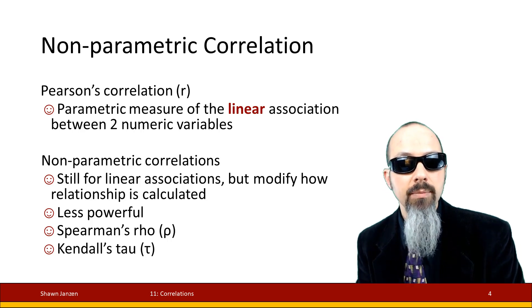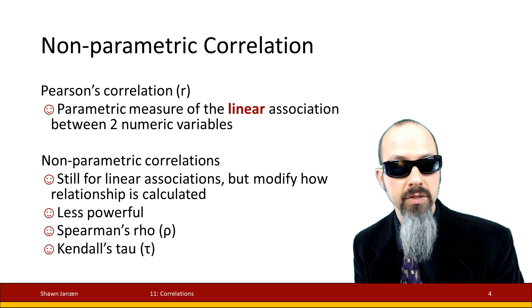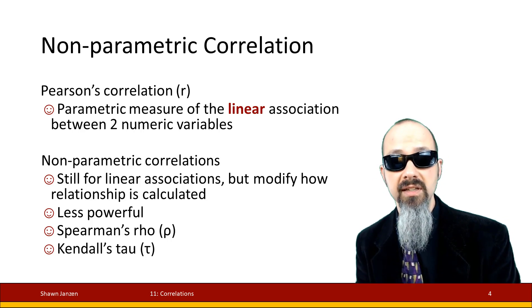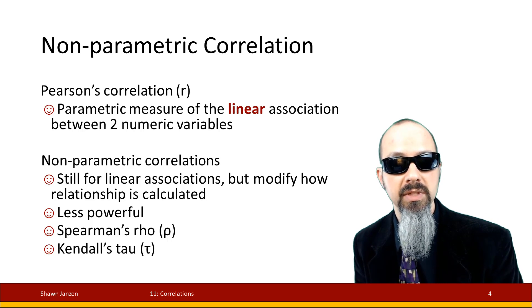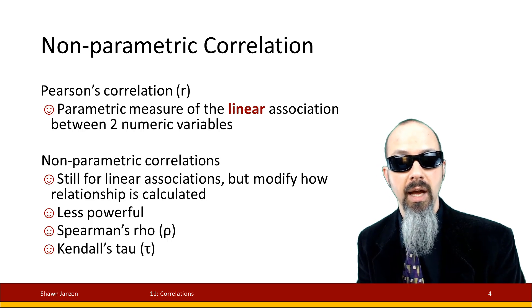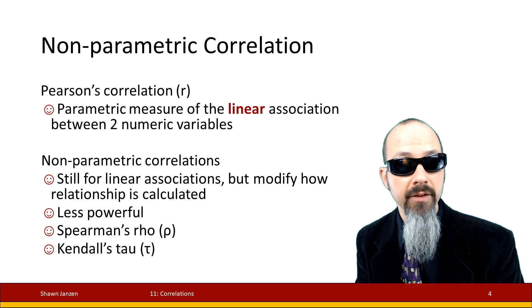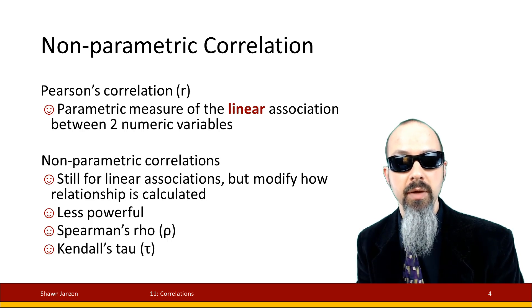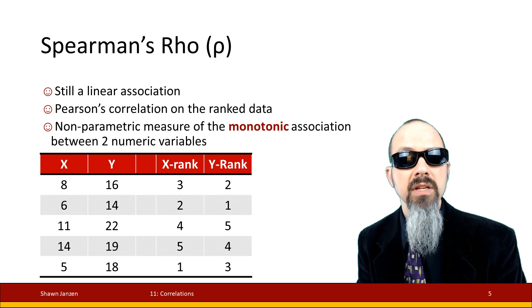Being non-parametric, they're less powerful than their parametric counterparts. So if you're doing significance testing, keep in mind that your p-values will tend to be adjusting and you're going to find significance less often. We're going to have two types: Spearman's Rho and Kendall's Tau. Let's go ahead and start with Spearman's Rho.